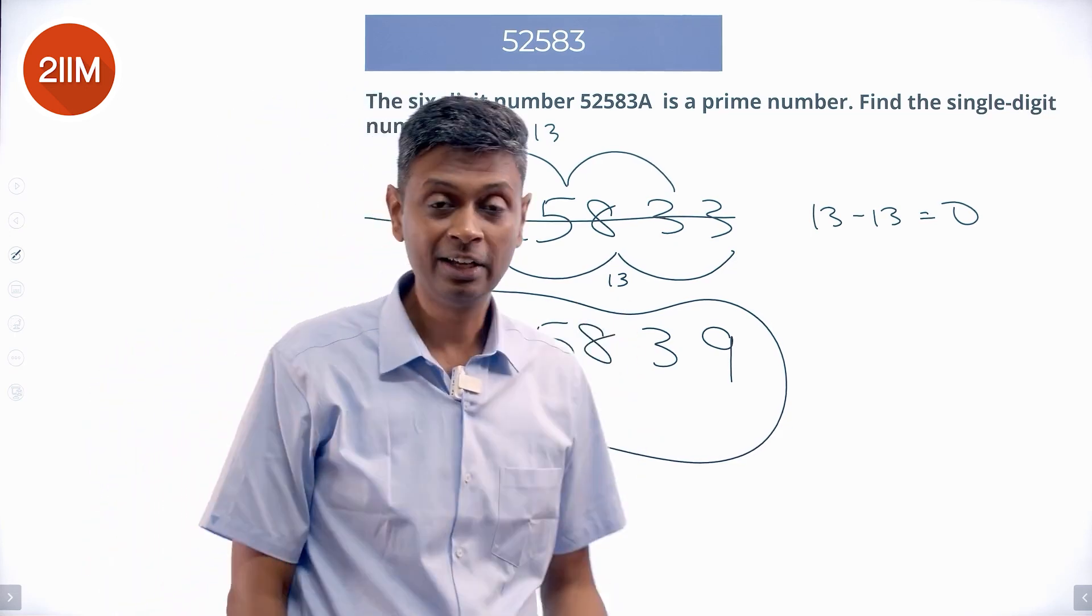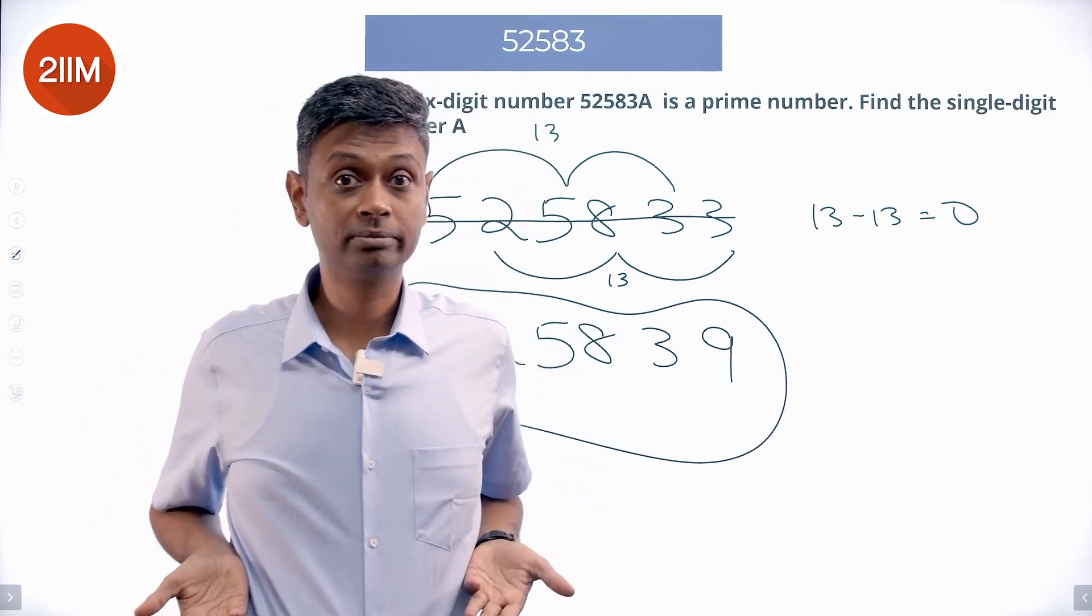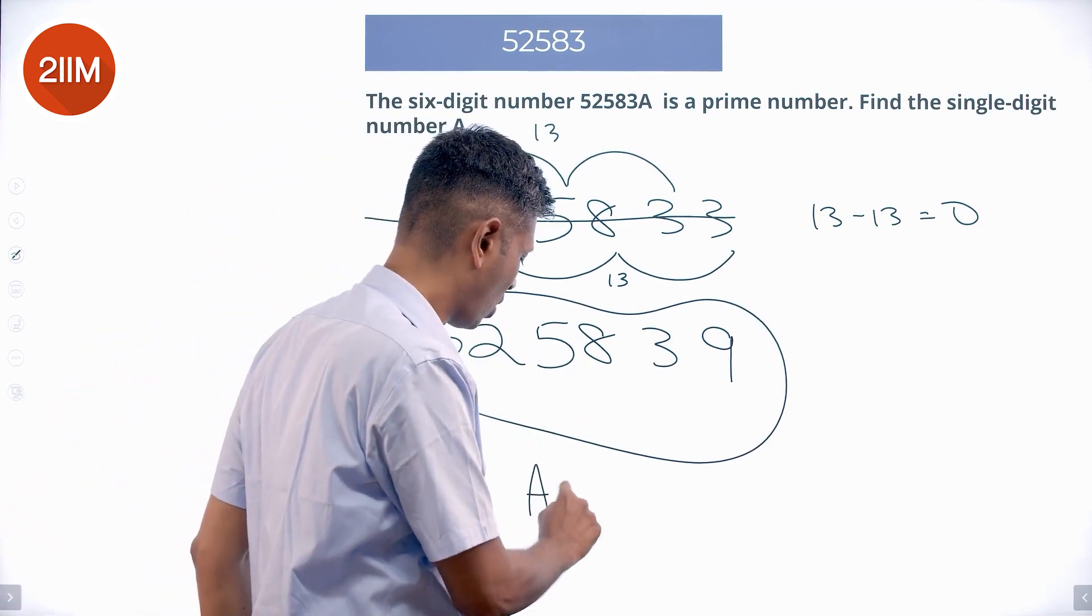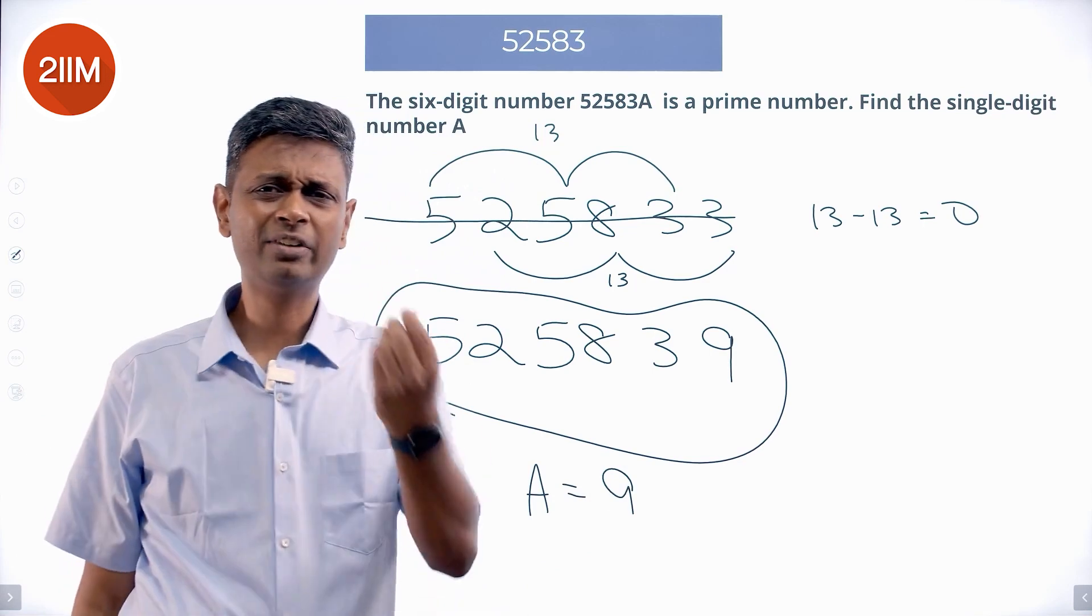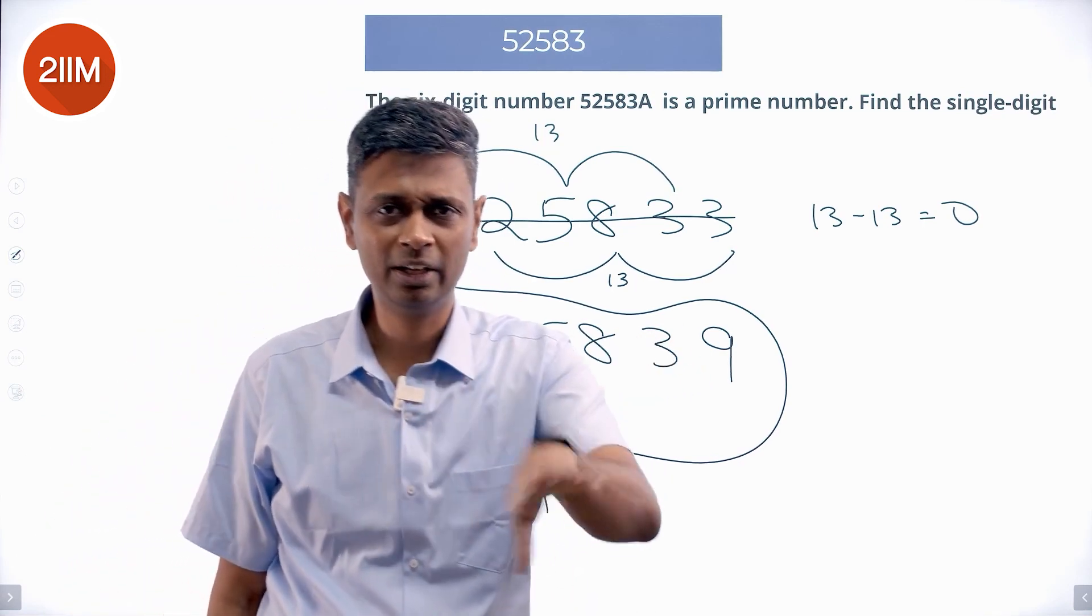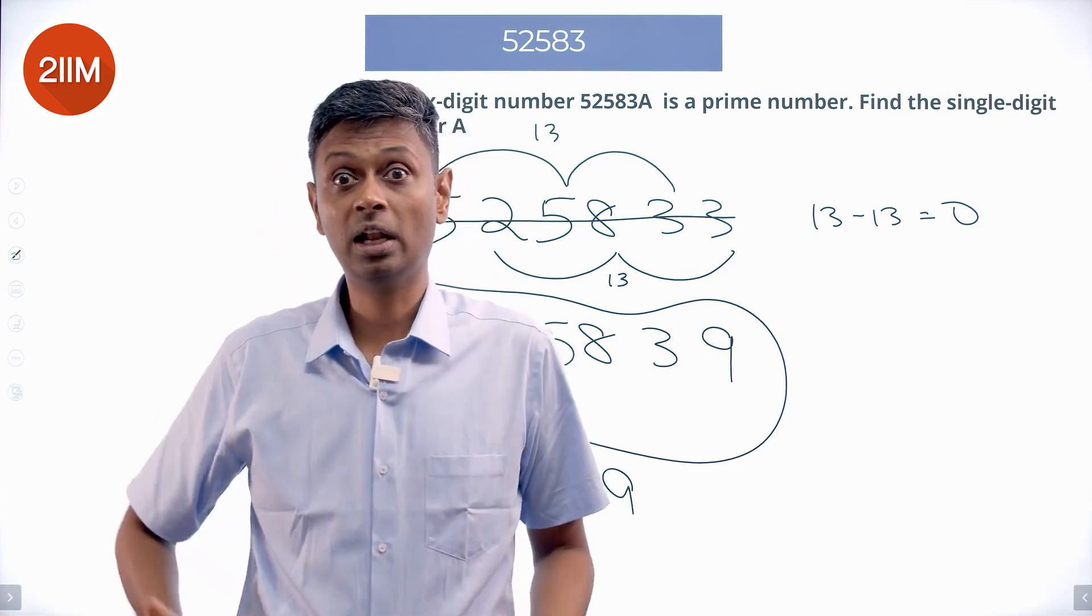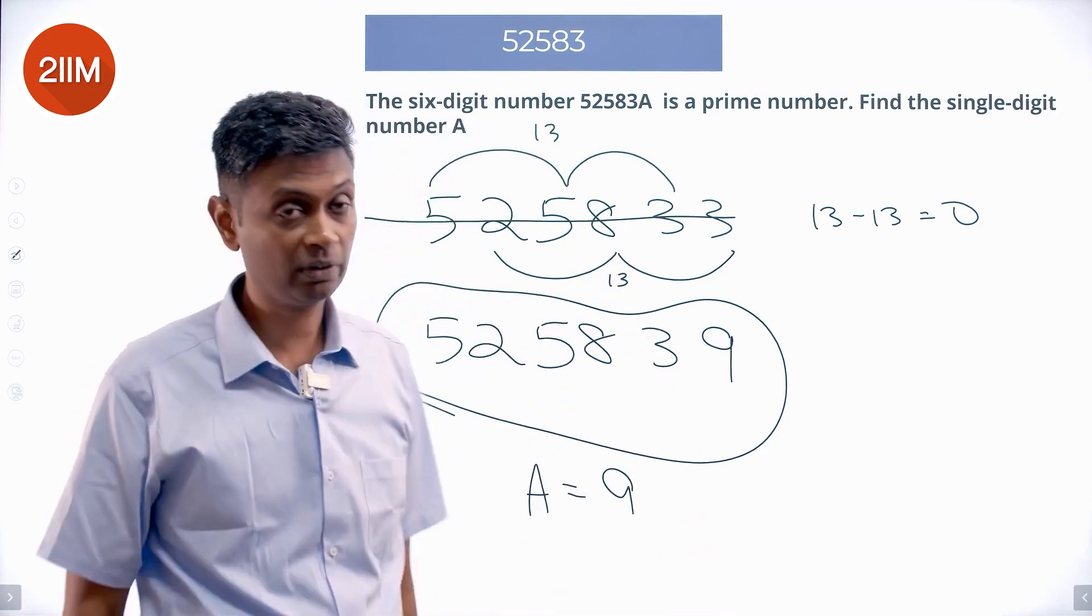A can only be 9. This number will have to be prime—that's what the question is clearly saying. So my answer: A is 9. All I do is eliminate even numbers, eliminate multiples of 5, eliminate multiples of 3. I am left with only two possibilities. Out of two, luckily for us, this number is a multiple of 11. Game over. Done.